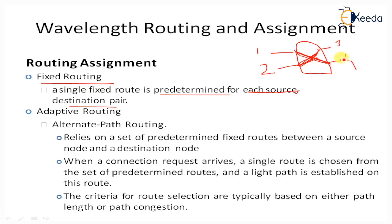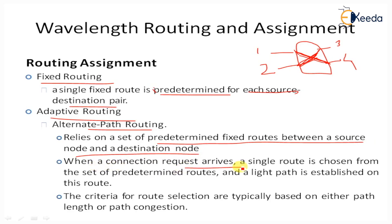In adaptive routing, alternate routing paths are possible. It relies on a set of predetermined fixed routes between the source node and destination node. When a connection request arrives, a single route is chosen from the set of predetermined routes. For example, with nodes 1, 2, and 4, two alternate paths may be available. Out of all predetermined paths, only one single route is selected for that particular data transmission, and the light path is established on that route. The criteria for route selection are typically based on either path length or path congestion.